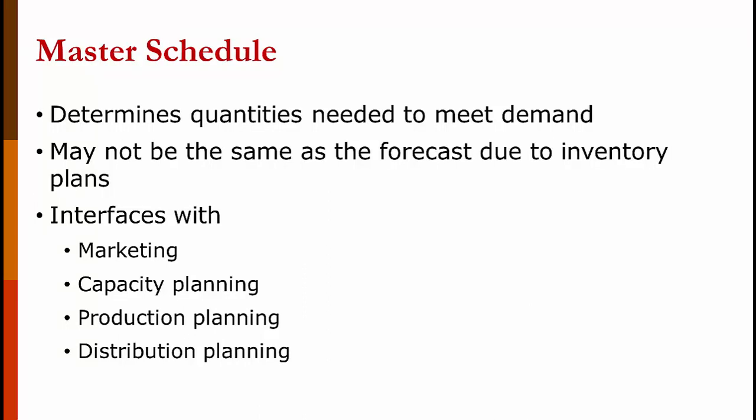For marketing, it tells them what they have available to sell. For capacity planning, it tells them if they're getting close to needing to add capacity. For production planning, it tells them what to produce. For distribution planning, it gives them an idea of what they're going to need to move around to ship to customers or to warehouses and the like. It's not an exact amount for distribution planning because they also may be moving inventory.